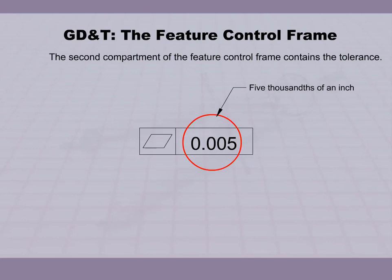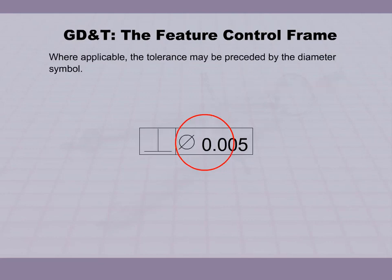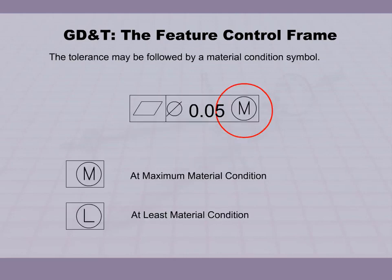The second compartment of the Feature Control Frame contains the tolerance, such as five thousandths of an inch. Where applicable, the tolerance may be preceded by the Diameter Symbol. The tolerance may be followed by a Material Condition Symbol: At Maximum Material Condition or At Least Material Condition.